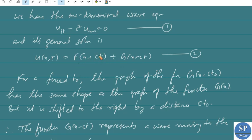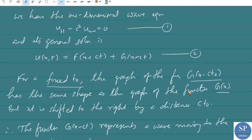Coming to the functions f and g — f and g are real-valued functions. For a fixed time t₀, consider the graphs of f(x+ct) and g(x-ct). The graph of g(x-ct₀) has the same shape as the graph of g(x), but g(x-ct₀) is actually the graph of g(x) shifted to the right by a distance ct₀.